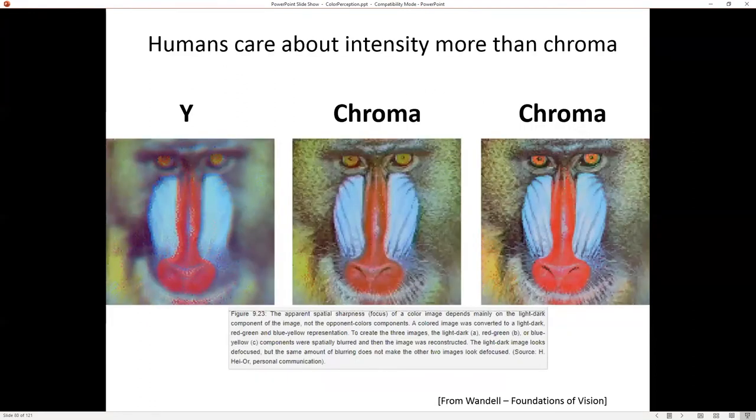So it turns out if we split by intensity and chroma, humans care about the intensity more than the chroma. So I've taken this image of this mandrill and broken it into Y, chroma one, chroma two. And I haven't labeled which chroma because I don't know if this was in IQ space or UV space or some other chroma space. And then I've blurred all three channels, one channel at a time, but all three channels.